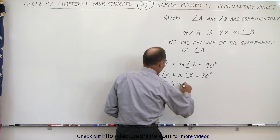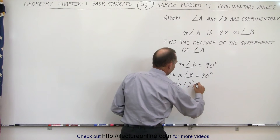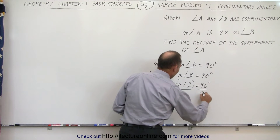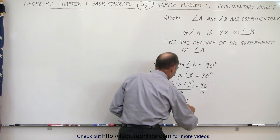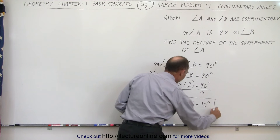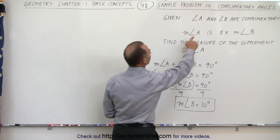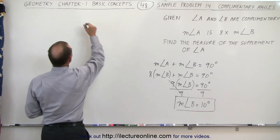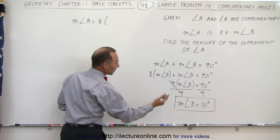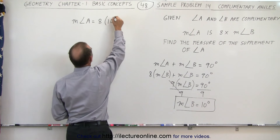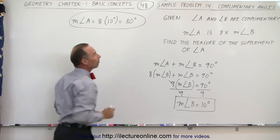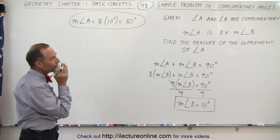So nine times the measure of angle B is equal to 90 degrees. If we divide both sides of the equation by 9, this cancels out and we can see that the measure of angle B equals 90 divided by 9, or 10 degrees. And if the measure of angle A is 8 times the measure of angle B, then the measure of angle A equals 8 times 10 degrees, which is 80 degrees.